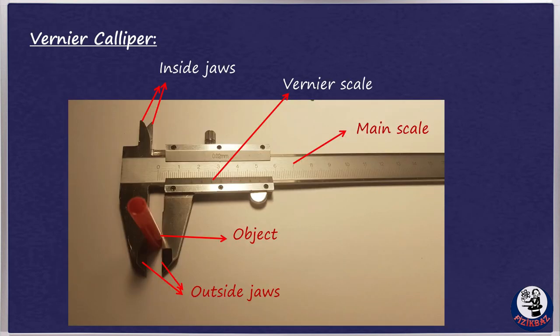Coming to the vernier calipers, here's how it looks like. Vernier calipers are used to measure smaller lengths to acquire greater accuracy, as its precision is 0.01 cm, I mean 0.1 mm. The inside jaws are used to measure the internal diameters of objects, while the outside jaws measure the external diameter. The vernier calipers have a main scale and a sliding vernier scale.